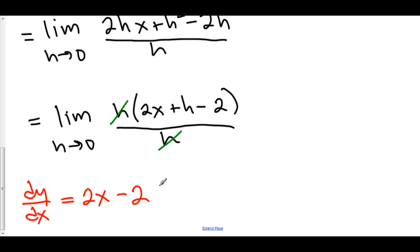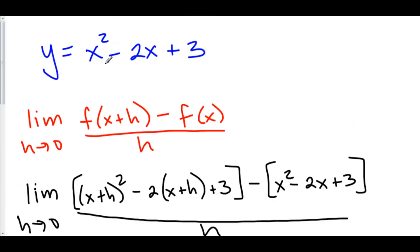What this means is this is the function that represents the slope of any tangent line at any x value of the function x squared minus 2x plus 3. So, for example, if you had been asked, what is the slope of the tangent line at x equals 5?